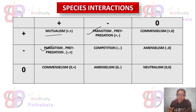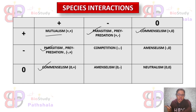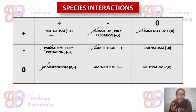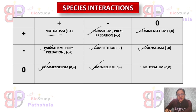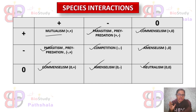In commensalism, one partner is positively affected and the other is not affected at all. In competition, both individuals are negatively affected. In amensalism, one is not affected while the other is negatively affected. In neutralism, both partners are not affected by each other. These are the six types of species interactions.